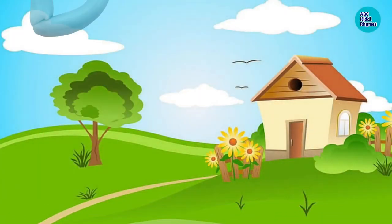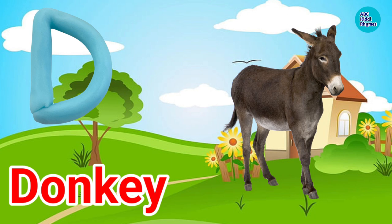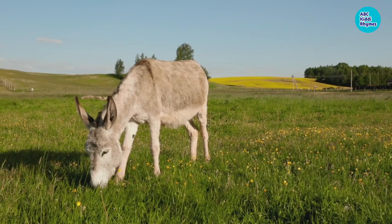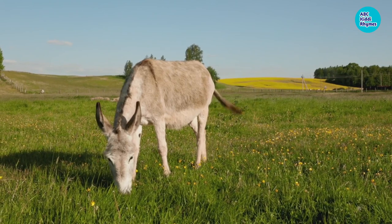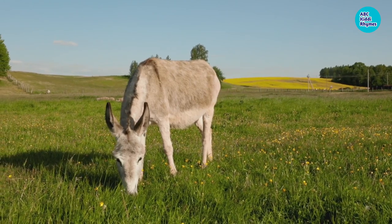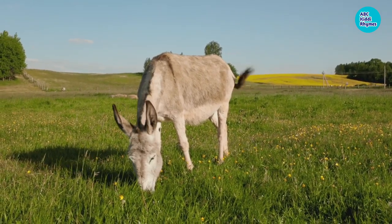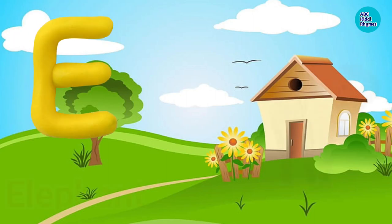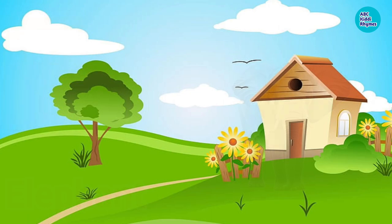D. D for Donkey. Donkey means Gadha. E. E for Elephant. Elephant means Hathi.